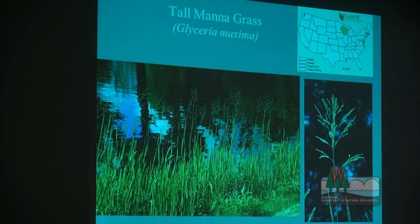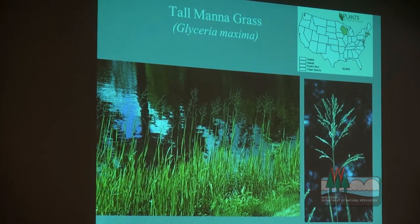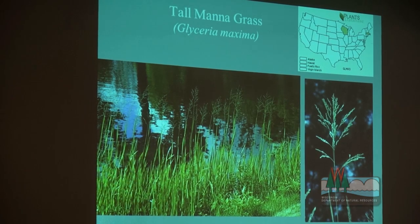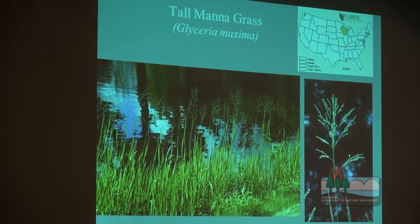Glyceria maxima is another species that may already be here — let us know if you have it. It's a manna grass, and if you don't know your grasses well, the easiest way to identify it is that it tends to form really big, dense stands, is very shiny, stays deep green late in the season, and outcompetes everything else including reed canary grass. We know it's found a lot in southeast and south-central Wisconsin.